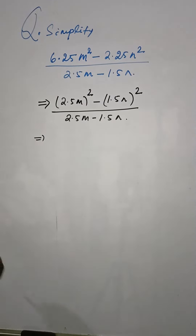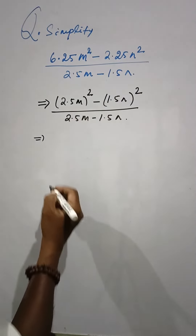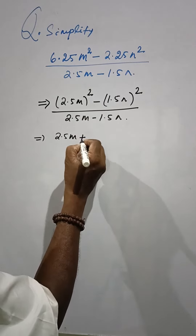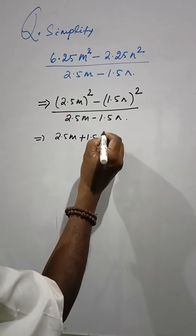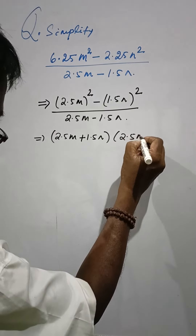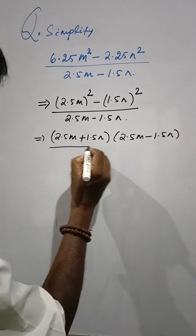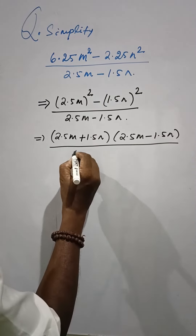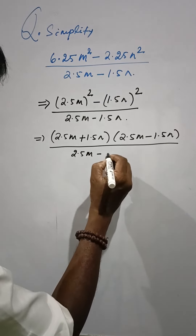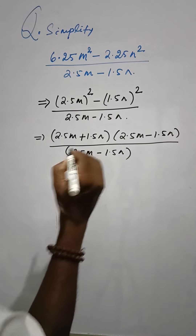Now this is a² minus b² — using the identity, we can expand this as 2.5m plus 1.5n into 2.5m minus 1.5n, whole divided by 2.5m minus 1.5n whole square.